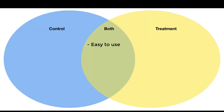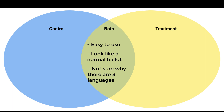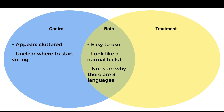The main themes I found are this: for both ballots, they're generally pretty easy to fill out — even if you didn't compare them with each other, they're pretty simple. You just fill in a bubble and vote for who you want. They also look like any other ballot according to the participants. The other thing is participants are not sure why there needs to be three languages.